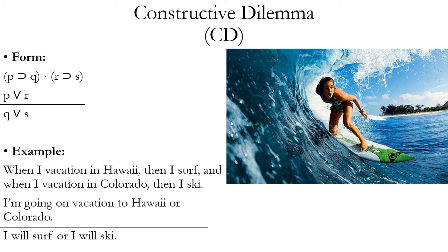Here's an example: When I vacation in Hawaii, then I surf. And when I vacation in Colorado, then I ski. I'm going on vacation to Hawaii or Colorado. Therefore, I will surf or I will ski. Note the word 'when' can be used to set up a conditional — it's logically interpreted with the horseshoe, the same as 'if.' A key thing to remember about constructive dilemma is that you need a conjunction of conditionals. In a proof, if the conditionals are on separate lines, you must join them with a dot before using the rule.